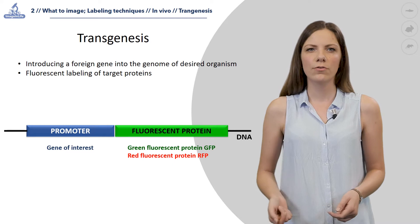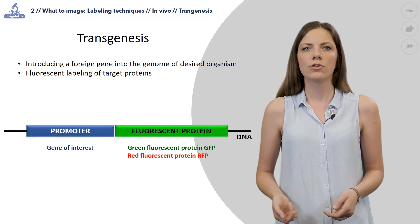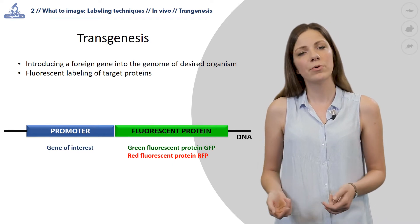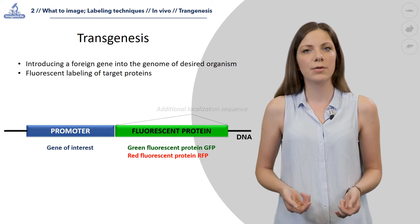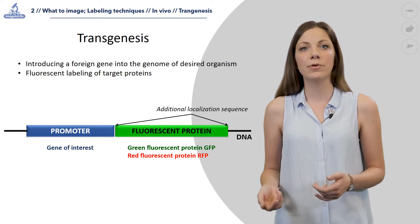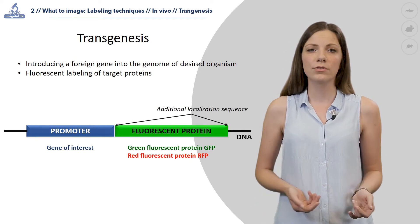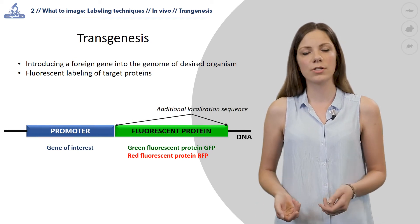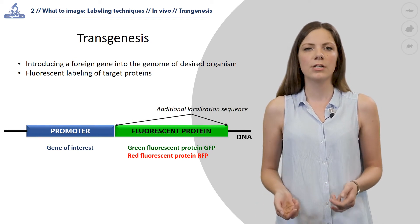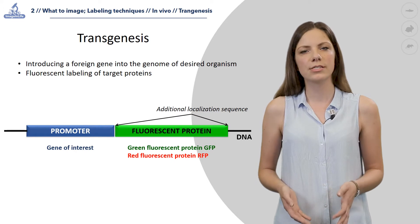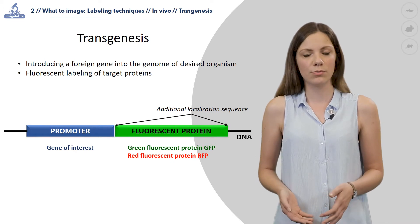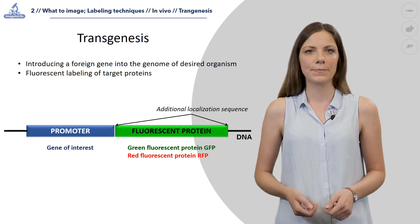Moreover, additional localization sequences — such as membrane or nucleus localization sequences — can be added before or after the sequence of the fluorescent protein in order to attach it to the particular cell compartment that we are interested in.